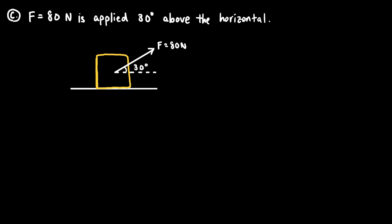In Case C, the force is applied at an angle, which adds some complexity. The first step is still to determine whether the applied force exceeds the maximum static friction, which was approximately 39 newtons. Looking at the vector triangle, we need to figure out if the relevant component of the 80 newton force is large enough to cause acceleration.